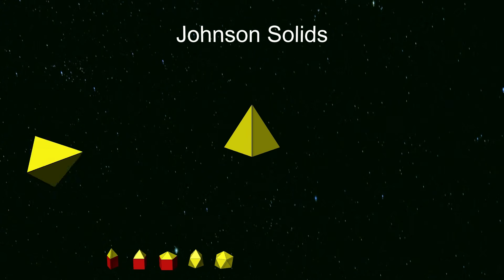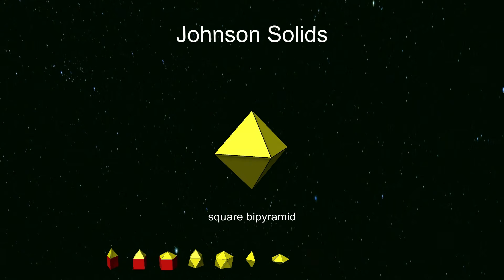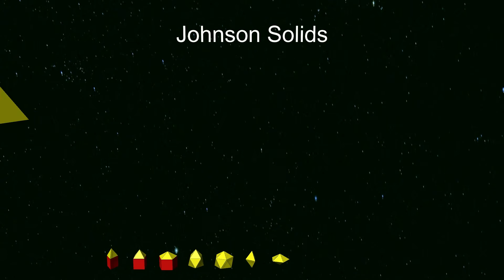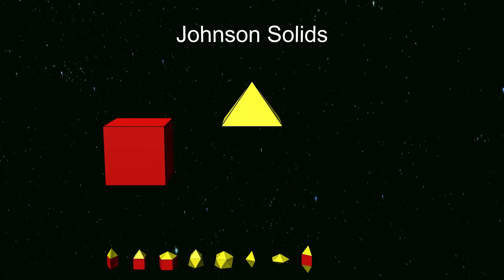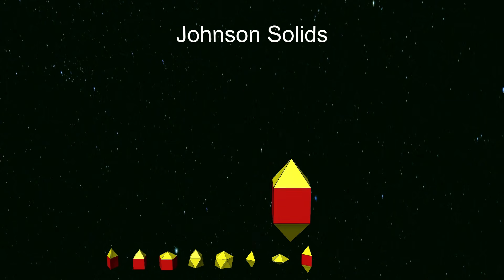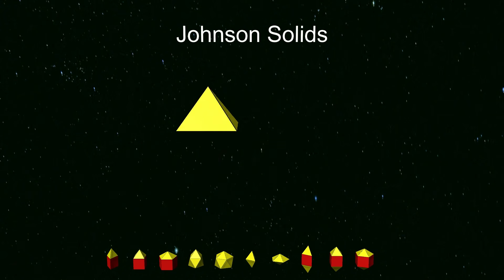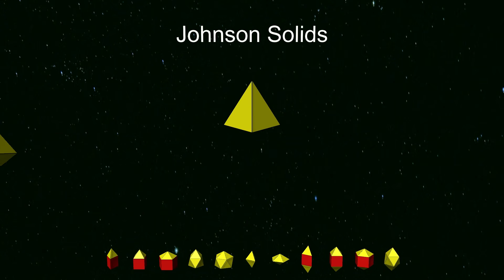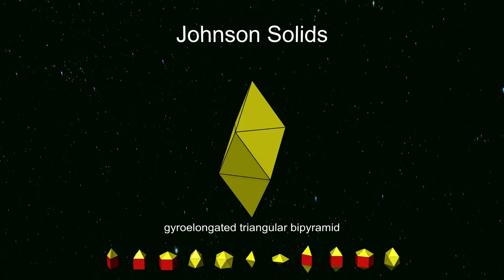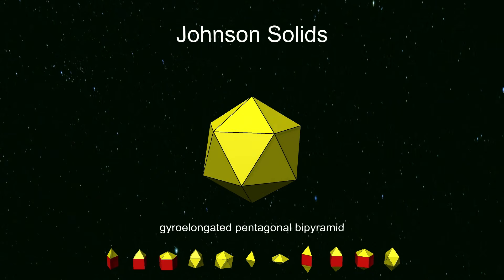We can join pyramids back to back to make a triangular bipyramid and pentagonal bipyramid. The square bipyramid is an octahedron, which is a Platonic solid, so isn't a Johnson solid. Then there are three elongated bipyramids — triangular, square, and pentagonal — and also a gyro-elongated triangular bipyramid. We exclude the gyro-elongated triangular bipyramid because it is concave, and also exclude the gyro-elongated pentagonal bipyramid because it's a Platonic icosahedron.